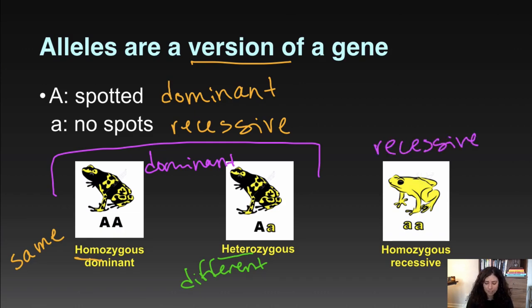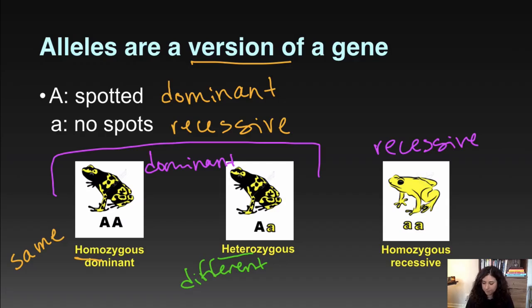That's just a quick reminder of what an allele is — it's that big A or little a, the dominant version of the gene or the recessive version of a gene.